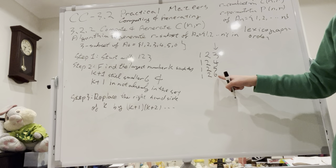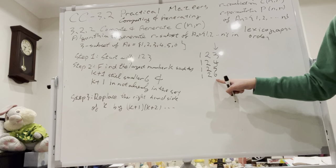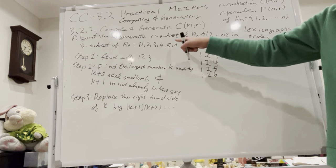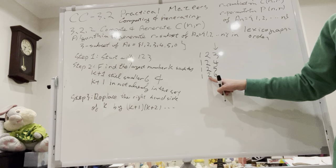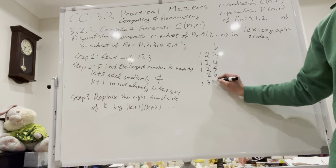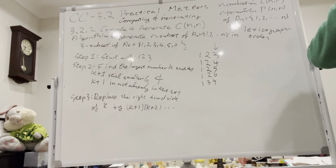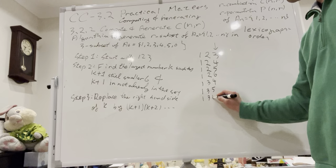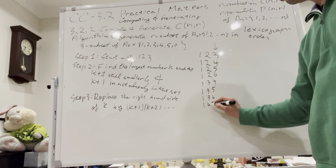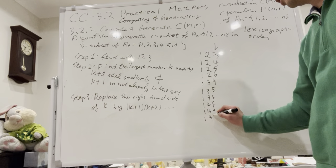Continuing: 6 is not a valid k because we can't replace it with 7. So the largest valid k is 2, and we replace it by 3, 4, giving {1,3,4}. Then continuing: {1,3,5}, {1,3,6}, {1,4,5}, {1,4,6}, {1,5,6}. Then moving to the 2 as well, we continue generating all subsets in order.